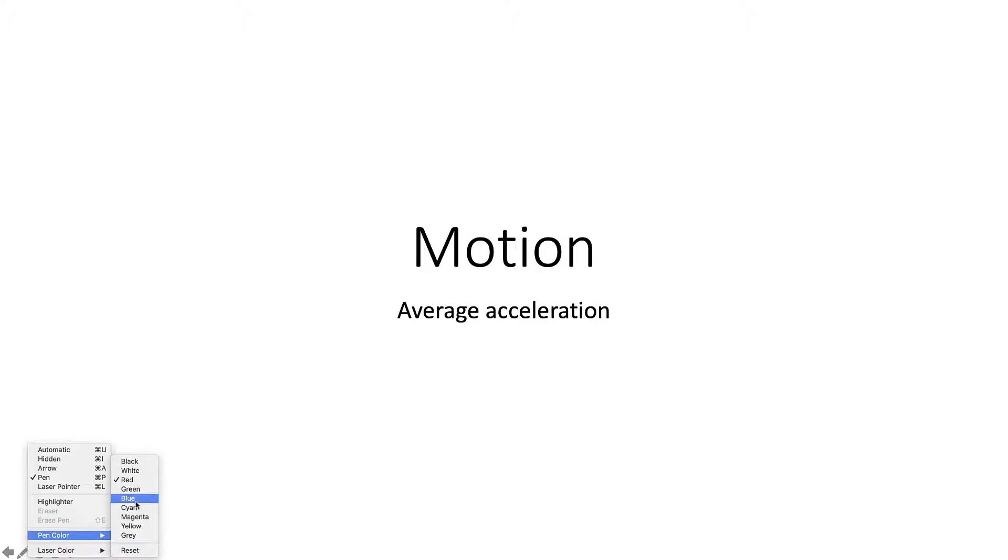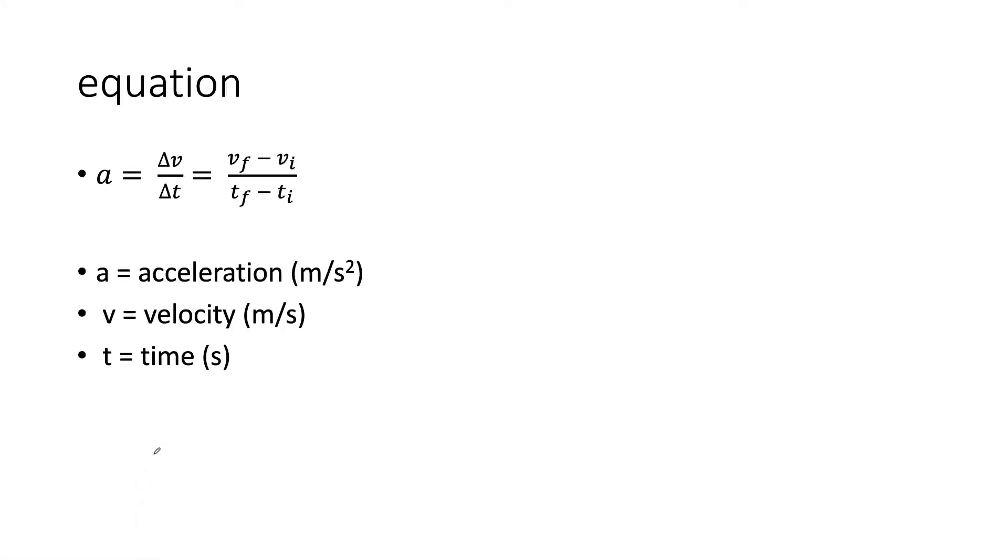Let's change pen color to blue. So today we're looking at average acceleration. When we look at the equation we're going to use, all the problems deal with something like this, and we're dealing with acceleration, velocity, and time. We're going to have to look for either acceleration, velocity, or time, either one of those three variables.